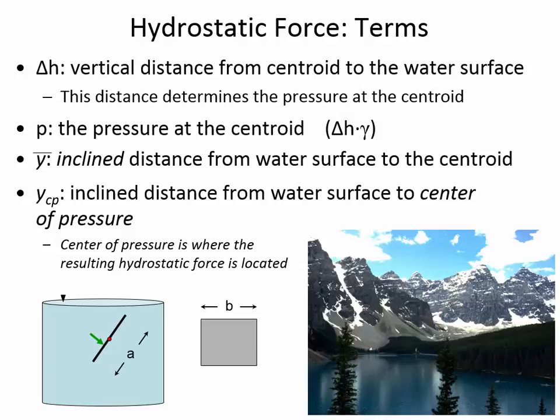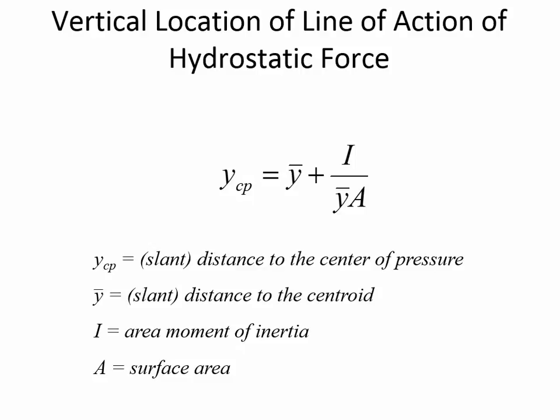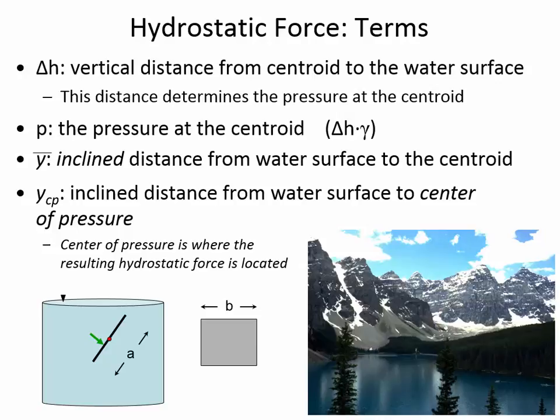We want to find the magnitude and the location of the equivalent force. This is the formula for Y-CP. Once you have identified Y-bar — usually by applying geometry, whether from given angles, recognizing a 3-4-5 triangle, or reading dimensions directly — you'll have Y-bar, area moment of inertia from the shape formulas, and the area. From those, you calculate Y-CP, which tells you the inclined depth from the water surface down to where the force is acting on the gate.